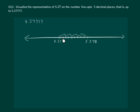Next is 5.3772 and so on. Now the given number 5.37777 will lie between 5.3777 and 5.3778. So let us magnify and divide into 10 equal parts and finally get 5.37 bar up to 5 digits of decimal.